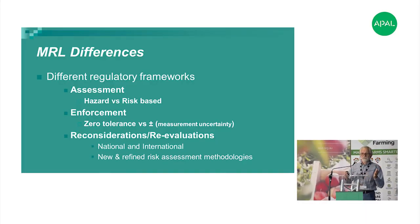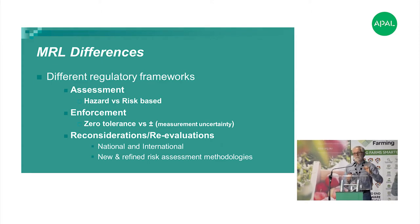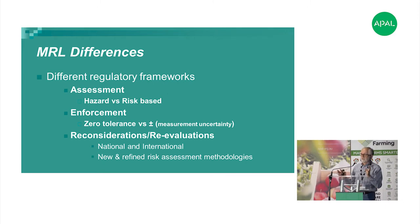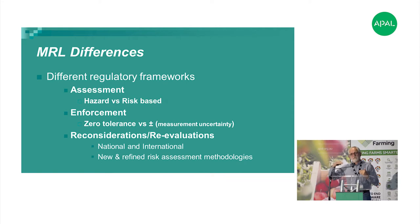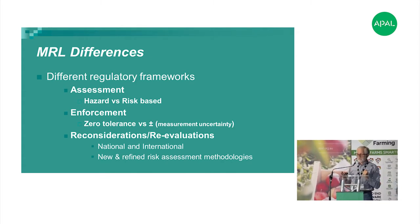Then there's enforcement. Some countries have zero tolerance — if you don't meet the MRL, that's it. One area where Europe is a little more flexible is that they accept measurement uncertainty, acknowledging no laboratory is perfect. They'll accept plus or minus 50% of the MRL. If you're above the MRL but within the plus 50%, you'll be notified but not automatically quarantined or banned. But they're the exception — most other places it's zero tolerance.